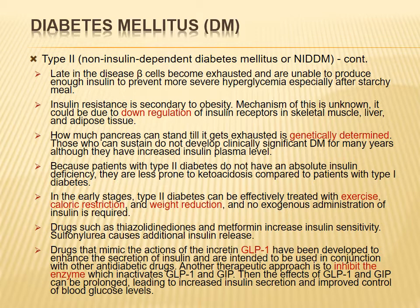A key difference between Type 1 and Type 2: in Type 1, ketoacidosis develops within hours of missing insulin. In Type 2, since some insulin is present, ketoacidosis takes longer to appear and is less severe than in Type 1.